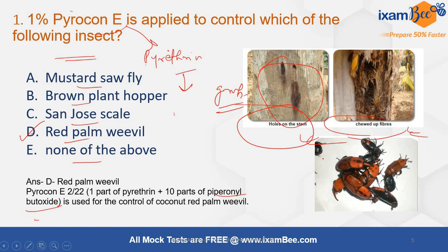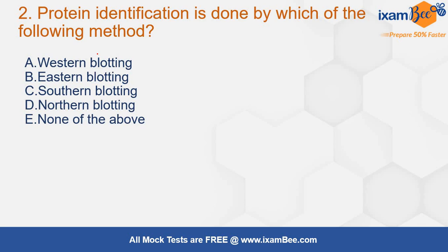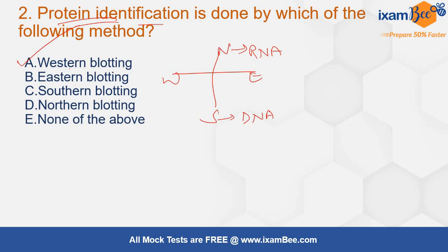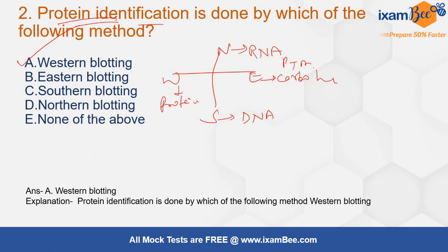The next question is: protein identification is done by which of the following methods? Options are western blotting, eastern blotting, southern blotting, northern blotting, or none of the above. The correct answer is western blotting. There are four types: northern blotting is mainly used for RNA, southern is mainly used for DNA, eastern blotting mainly for carbohydrates and post-translational modifications, and western blotting is mainly used for protein identification.